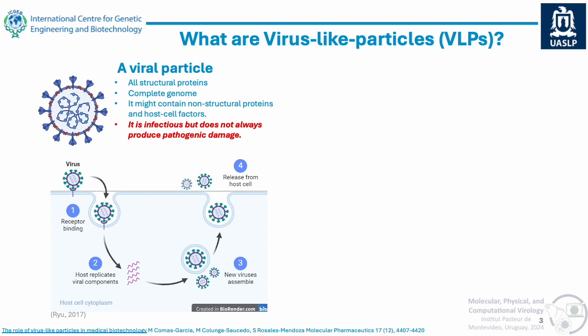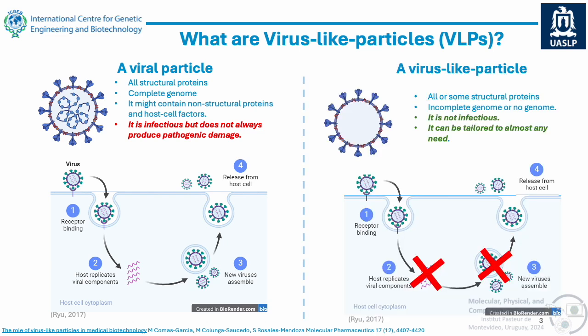A viral particle has all the structural components and a complete genome. It might contain non-structural proteins and host cell factors. It's infectious, but it does not always produce pathogenic damage. A viral-like particle, by contrast, can contain all or some of the structural proteins, either contains no genome or an incomplete genome — so it's not infectious — and most importantly, it can be tailored to almost any need you have.